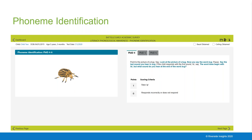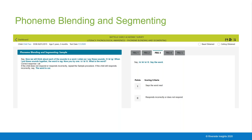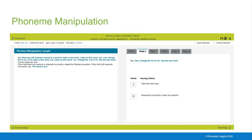Phoneme blending and segmenting: the child blends individual phonemes to create words and breaks words into individual phonemes. Phoneme manipulation: the child adds and removes phonemes in initial and ending positions in words, and substitutes phonemes in the initial, medial, and ending positions to create new words.